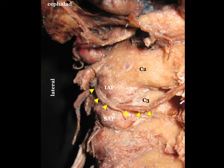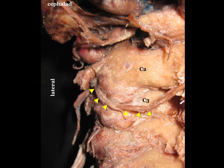So the third occipital nerve has a special course, and compared to the medial branches shown in the sequel, this nerve is very big. And this is the reason why it may be reliably visualized with ultrasound in most cases.